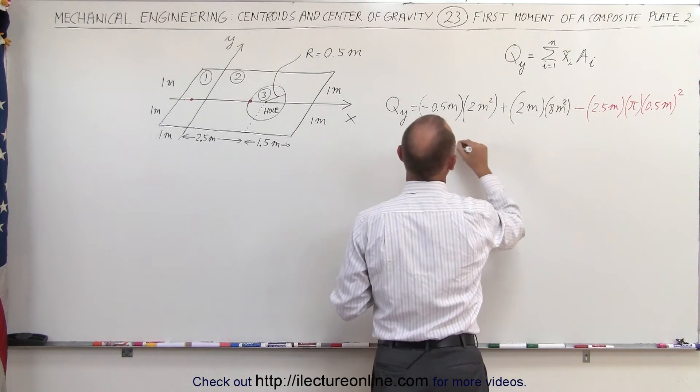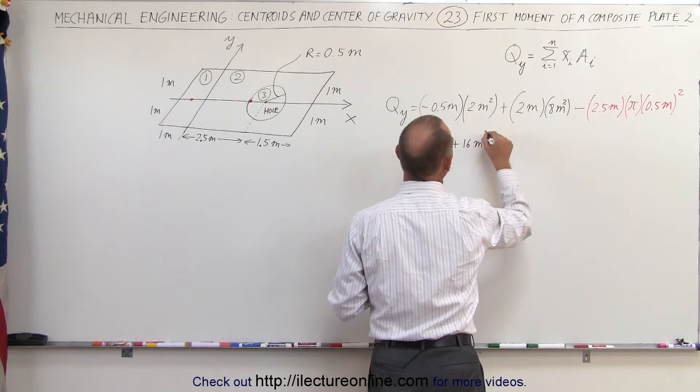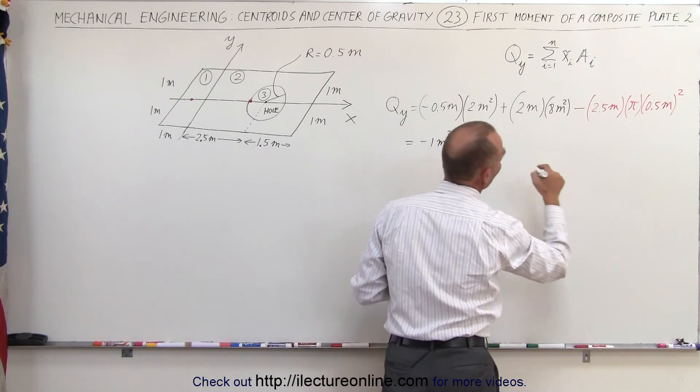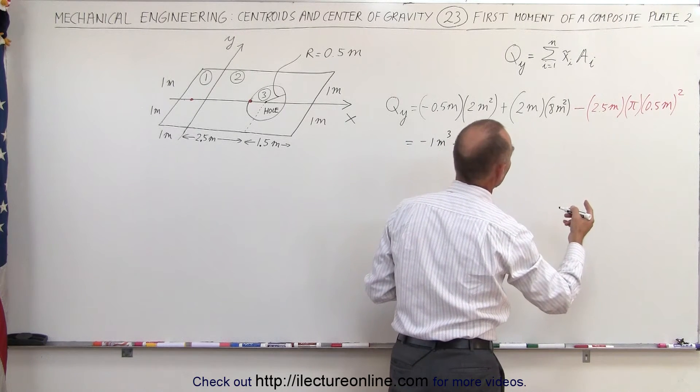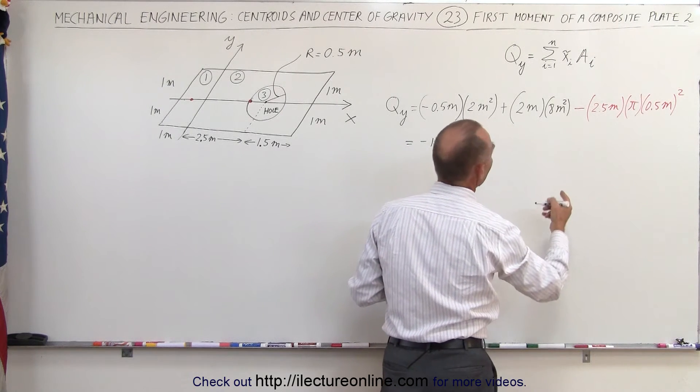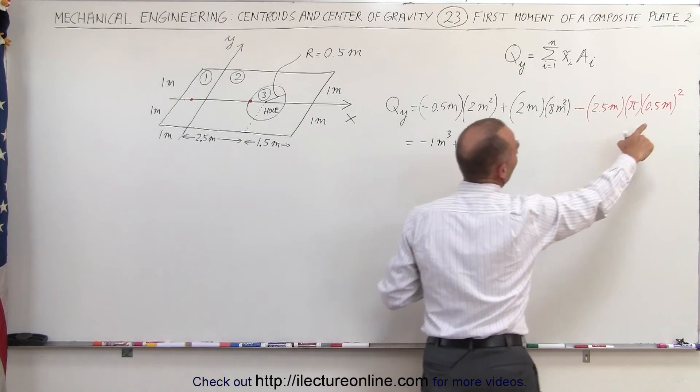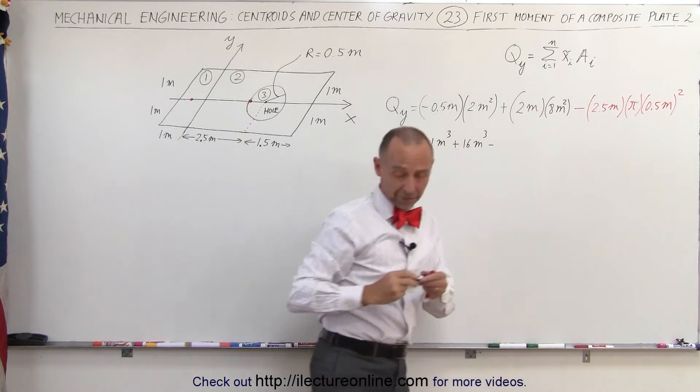2 times 8 is plus 16 meters cubed and minus 0.25, let's see that's 0.25, I better get a calculator for that one.